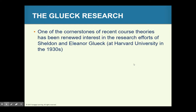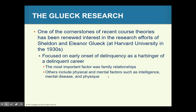The Gluck research focused on early onset of delinquency as a telling indicator of a delinquent career. They noted that children who are antisocial early on in life are the most likely to continue those offending careers into adulthood. The most important factor identified was family relationships. If family relationships are one of the biggest factors in keeping kids from continuing delinquent behavior, it makes sense that the majority of those in prison have very high ACE scores.